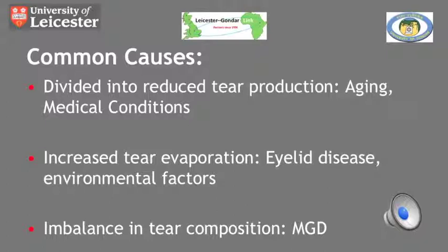The third cause of dry eye, imbalance in tear composition, is often caused by MGD, meibomian gland dysfunction. This is a chronic inflammatory process of the meibomian glands associated with skin conditions such as acne and rosacea. The oil glands in the lid of rosacea sufferers secrete a modified oil which leads to inflammation of the meibomian gland openings found at the edge of the eyelid. The meibomian glands can become blocked with thick secretions, altering the tear film composition, and the oil component of the tear film is reduced, resulting in dry eyes.